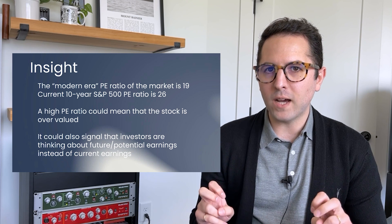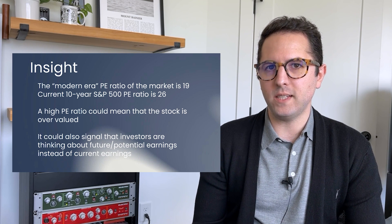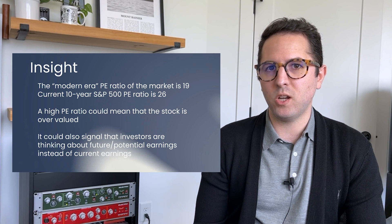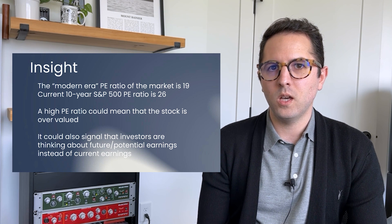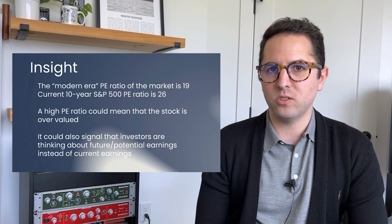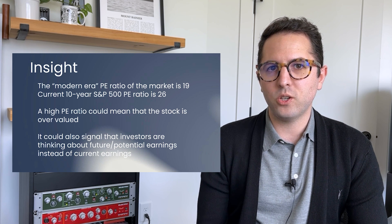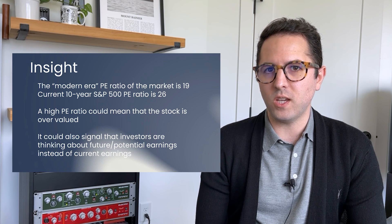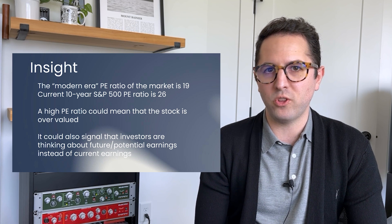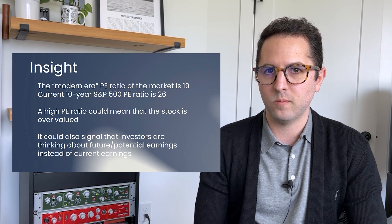The modern era P.E. ratio is 19. However, the current 10-year S&P 500 P.E. ratio is 26. A high P.E. ratio could mean that the stock price is overvalued. It could also mean that investors are thinking about future and potential earnings more than current earnings. This is why companies mentioning AI have had large increases to their share price.